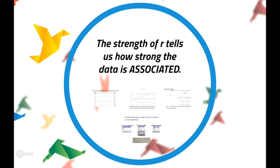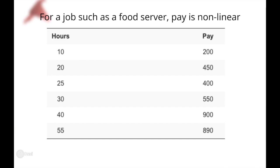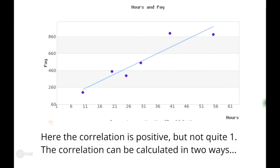The strength of r tells us how strongly the data is associated. Let's go back to the example with the waiter or waitress. Here's an example of hours they worked and the pay they received. You can see right off the bat that as the hours increase, the pay is increasing as well, but then decreases, then increases, then decreases. So it's not purely a straight line, and if you graph it, you can see that the correlation is not exactly positive one.